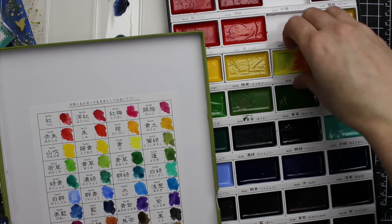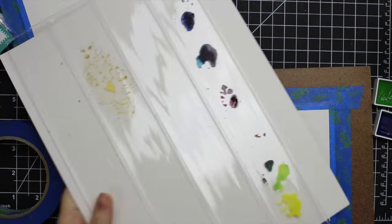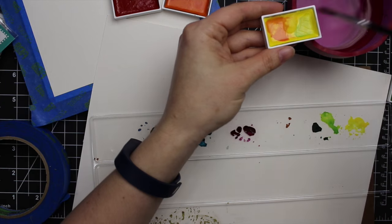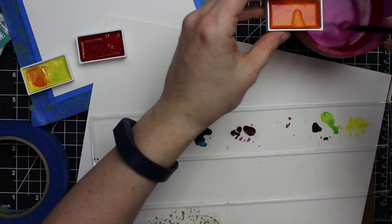So I pulled up my Gansai Tombi watercolor paints and decided I want to do one in pinks, yellows, and oranges and the other in blues, greens, and purples. So I pulled out the colors I wanted to use and added water to them to activate them.